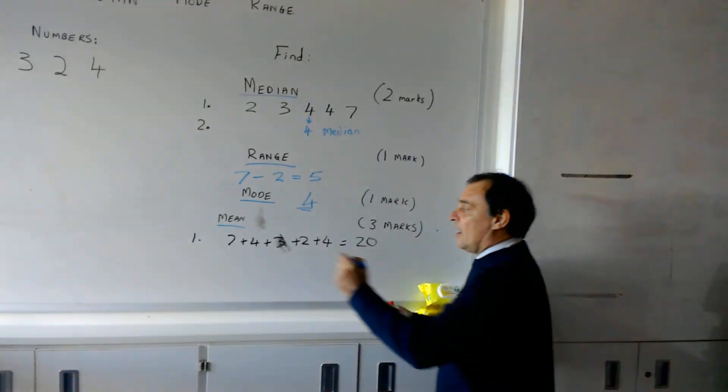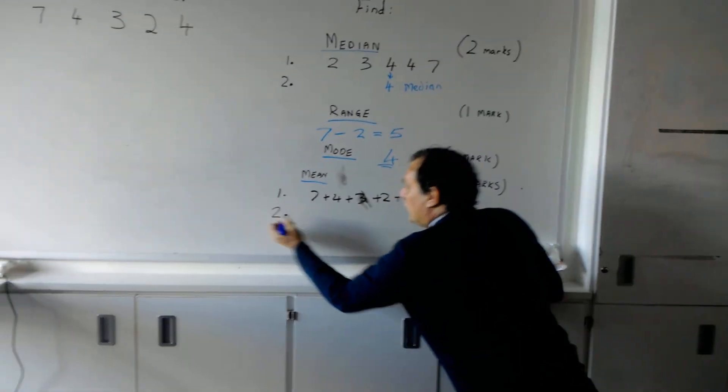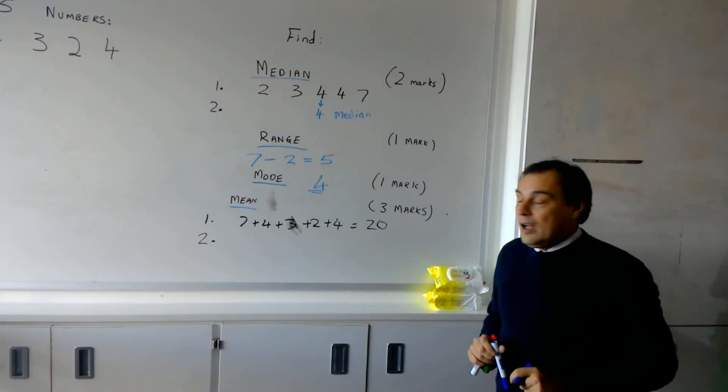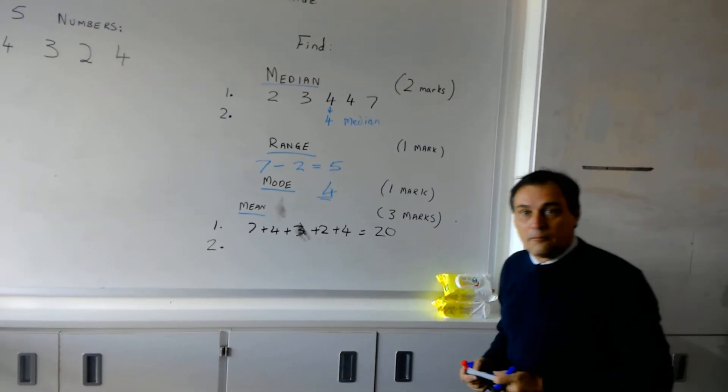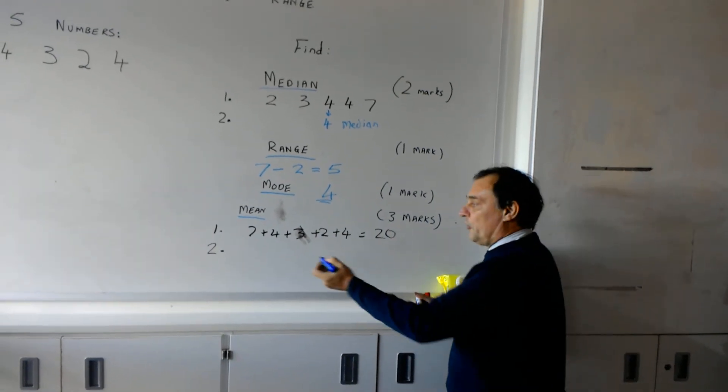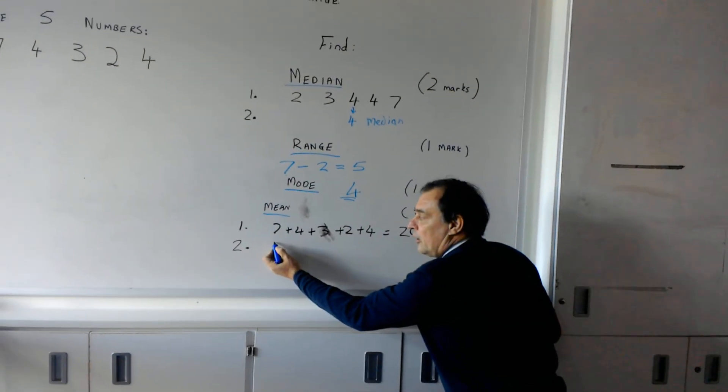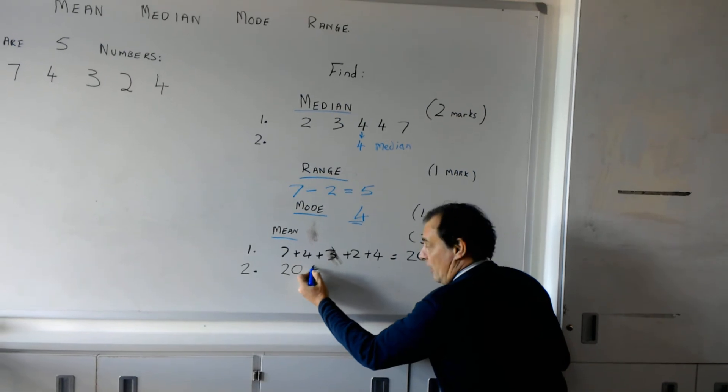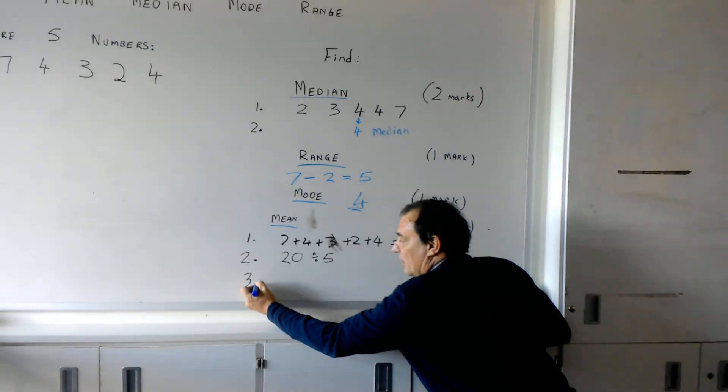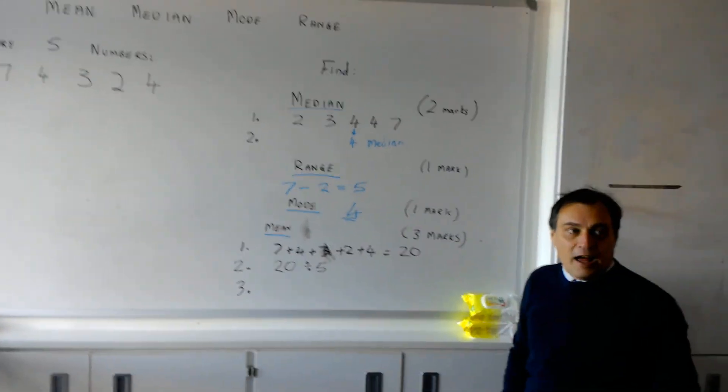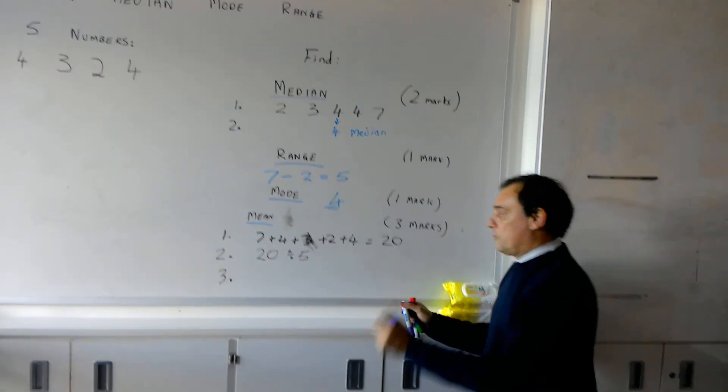The second job we've got to do is we've got to divide how many. We've got to divide our total by how many numbers there are. Five. Yeah. So it's five. So what sum would I write on the board? Twenty divided by five. Excellent. And then the third job we've got to do to get the mark is to write the answer down. What's that? Four. Brilliant.